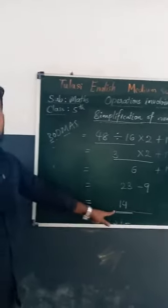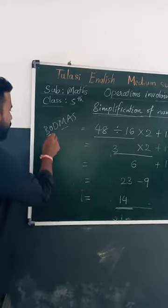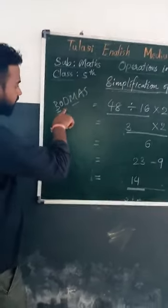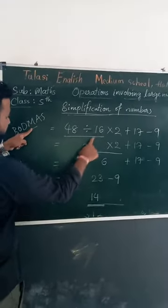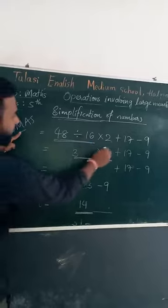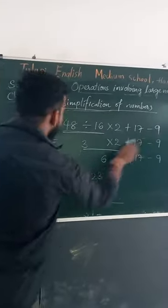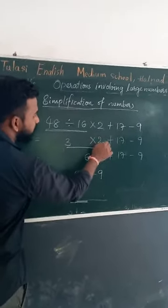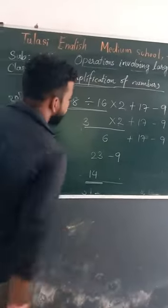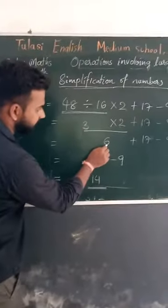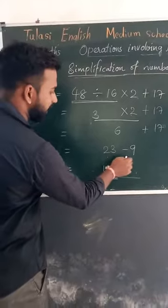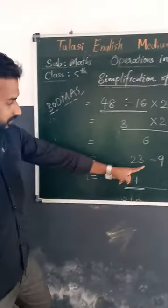So to recap: first bracket — not there. Of — not there. Division: we divided 48 by 16, we got 3. Remaining as it is. Next multiplication: 3 into 2 equals 6, plus 17, minus 9. Then addition: 6 plus 17 equals 23. Then subtraction, which comes last: 23 minus 9.